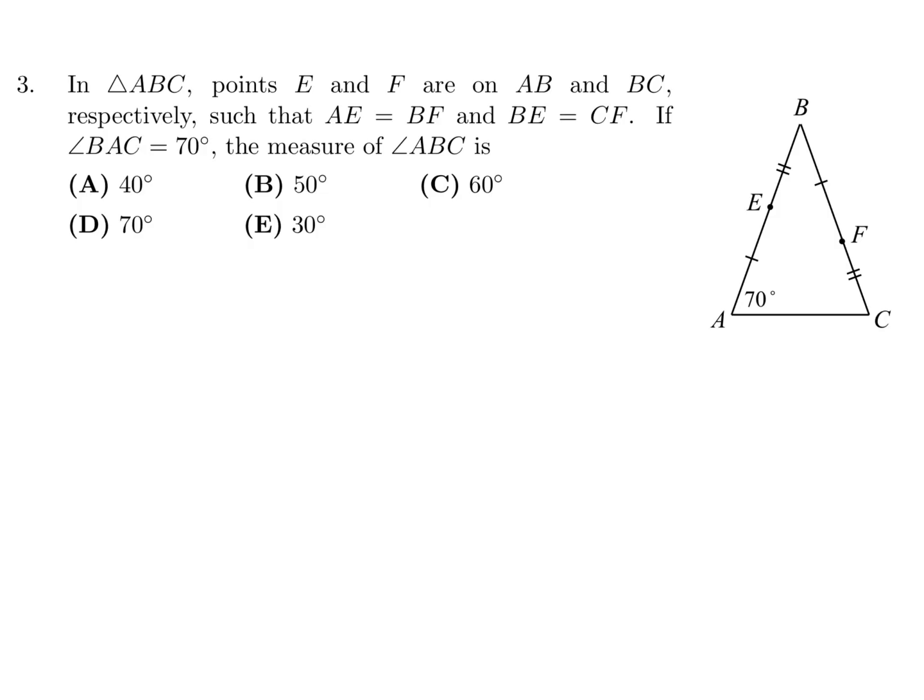In triangle ABC, points E and F are on AB and BC, respectively, such that AE is equal to BF and BE is equal to CF. If angle BAC is 70, the measure of ABC is... Well, that is equal to this, and that is equal to that, so that means the whole side of BA is equal to BC. So that is an isosceles triangle.